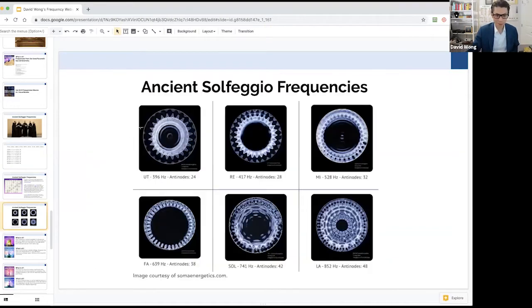But as you can see with cymatics, each one of these frequencies has a specific number of nodes. You can see if you count the nodes that come out from the frequency when they turn the frequency into a visible form - that's what cymatics is.